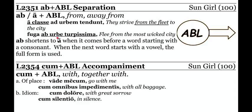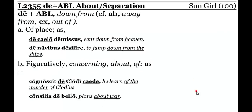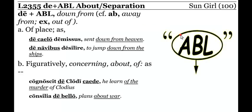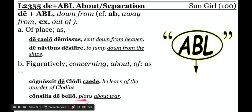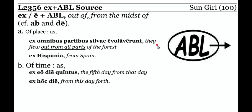Note that ab shortens to a before a consonant, just like a and an in English. Ab is the opposite of a limit phrase. Cum plus the ablative means with — to come with me — used for people, but it is not a means phrase; that would be straight ablative. De means either about or down from: down from heaven, down from the ships, or about the death of Clodius, plans about the war. Ex or e plus the ablative is the opposite of in plus accusative — going out of — and it works the same way.